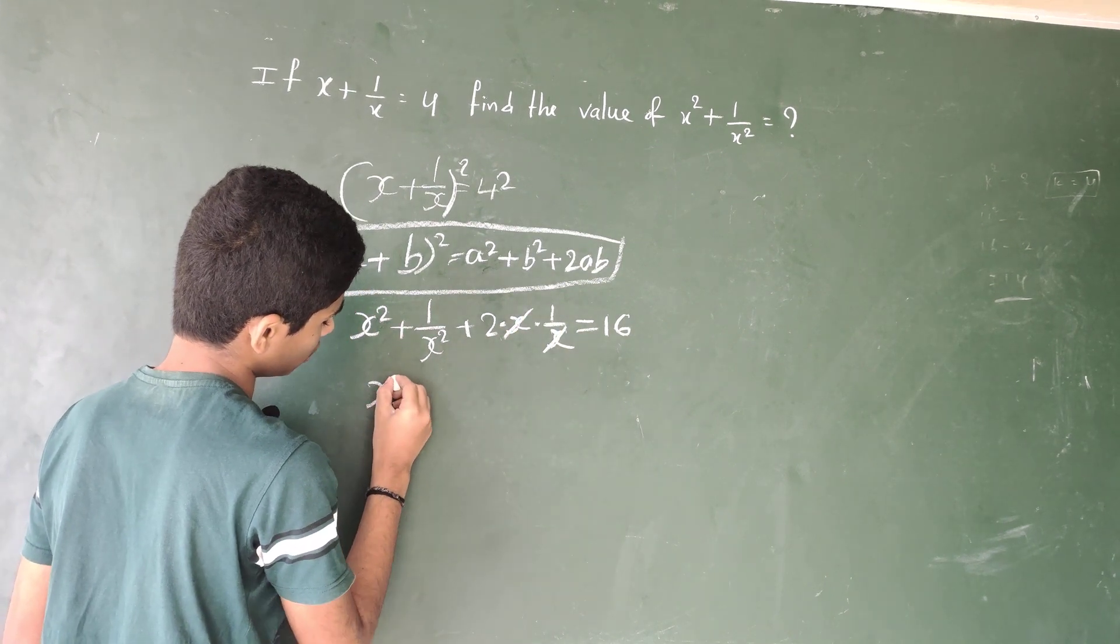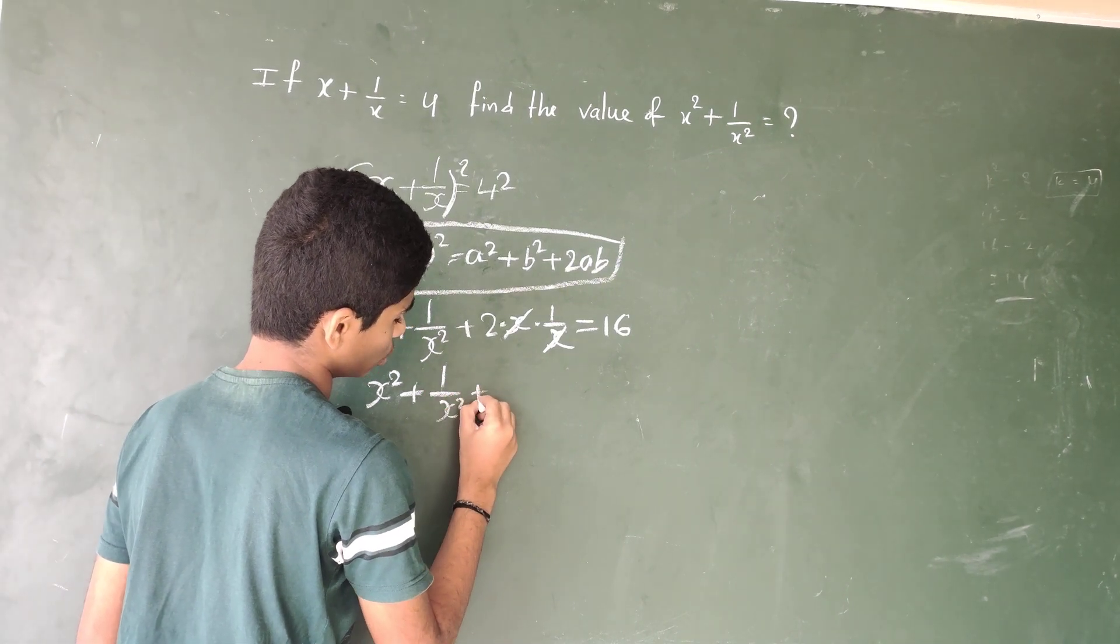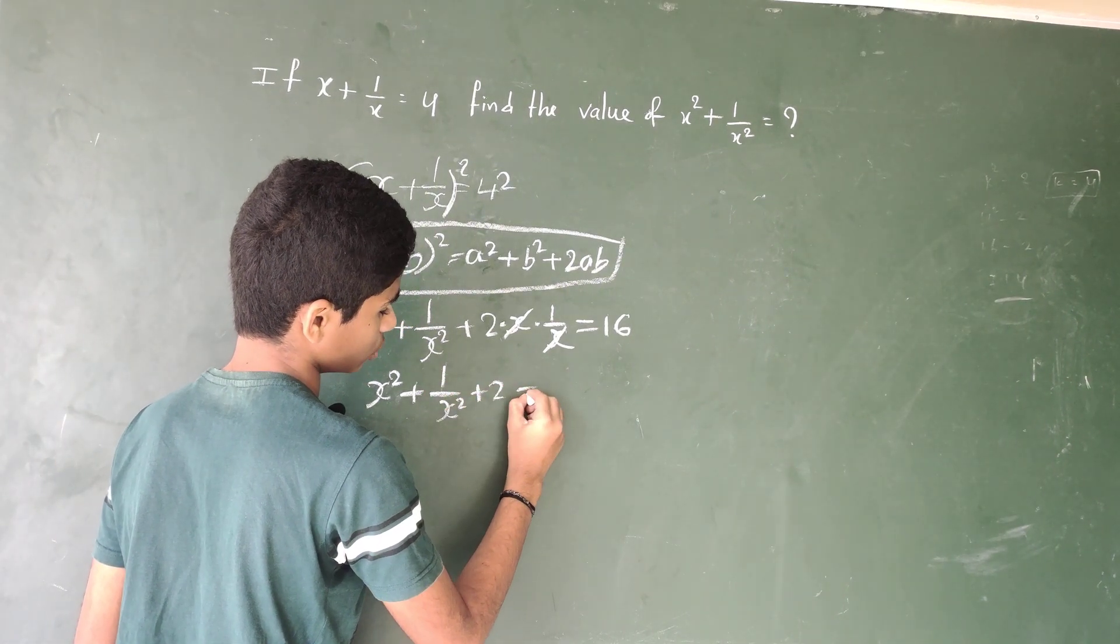Here, x square plus 1 by x square plus 2 equal to 16.